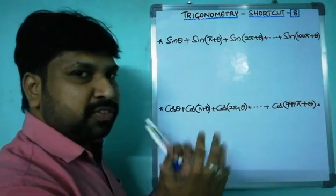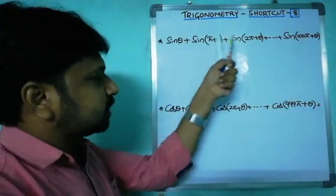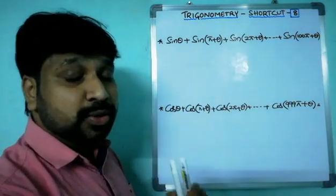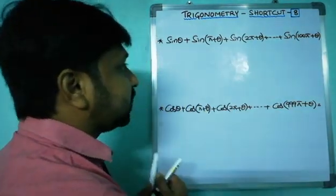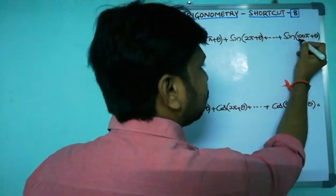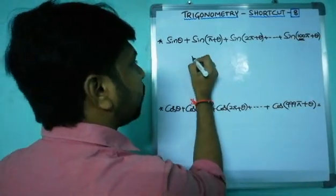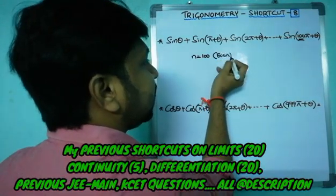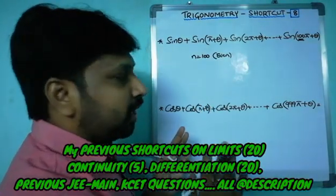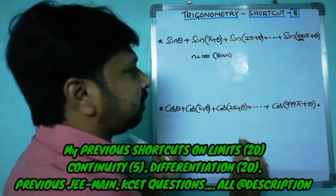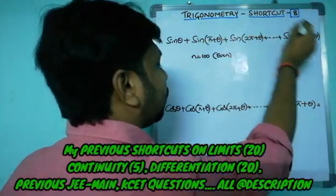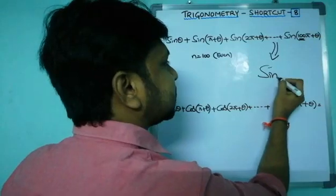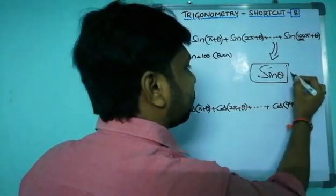Now coming to previous examination questions. Question: sin theta plus sin(pi plus theta) plus sin(2pi plus theta) plus ... plus sin(100pi plus theta) equals dash. Very very easy — just look at n equals 100. 100 is an even number. Whenever n is even, the total result equals sin theta according to our formula. Using this shortcut, just one second is enough to crack this kind of question.